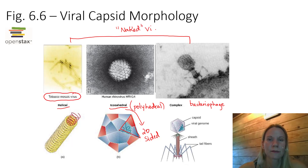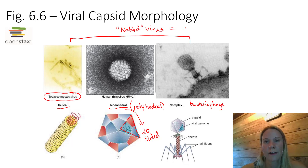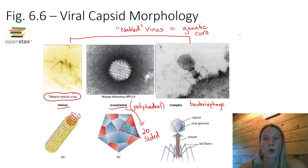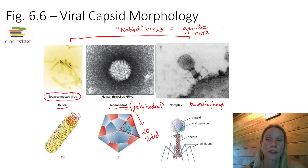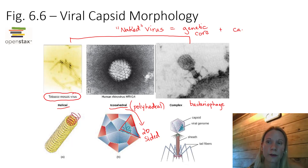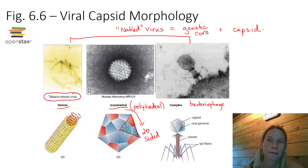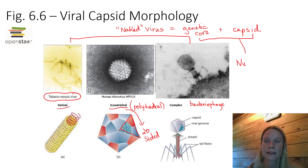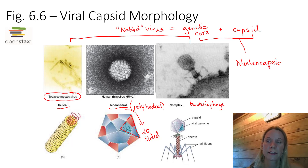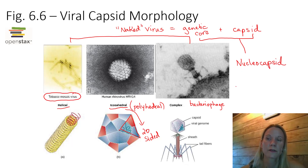So what does it mean to be a naked virus? Well a naked virus just means that the virus is composed of a genetic core - which we now know is composed of DNA or RNA, either double-stranded or single-stranded - plus the outer covering we call the protein capsid. Now together these two components, the core plus the capsid, we refer to that as the nucleocapsid. So a naked virus is just the nucleocapsid.